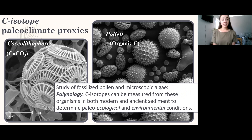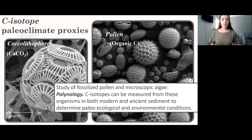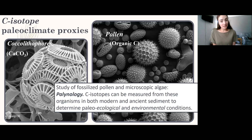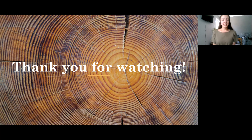Finally, palynology - the study of pollen and microscopic algae - provides another carbon isotope paleoclimate proxy. Coccolithophores are single-celled microscopic algae with carbonate shields surrounding their cell, allowing them to be preserved in the rock record. Fossilized pollen is also very useful because pollen forms specific morphologies and structures we can identify to understand what plants were living there. We can take carbon isotope ratios as well to understand even more specifically the ecological and environmental conditions during the time that pollen was deposited.